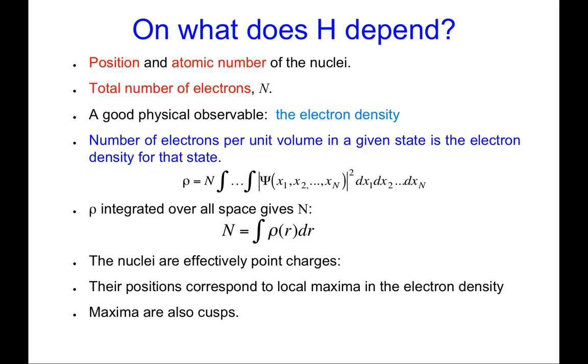First, I'd like to explore again this intuitive idea that there is a mapping between the electron density and wave function theory. And to do that, let's recall on what does the Hamiltonian that appears in the Schrödinger equation actually depend? So what information do you need in order to have a Hamiltonian?